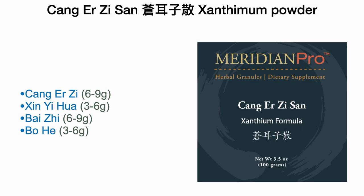In the initial stage of a wind-cold presentation where sinus headaches and runny nose are the chief symptoms, Cang Er Zi San — xanthium powder — is the ruling formula. The lung opens into the nose. Since cold is heavy, its natural tendency is to descend — penetrating through the nasopharynx into the throat and from the throat into the lungs. The throat is a natural barrier, a bottleneck that prevents the pathogen from attacking the lung. When a scratchy throat becomes the primary symptom, we know the pathogen is at the throat.